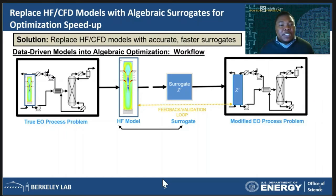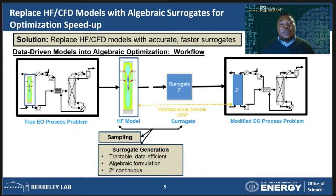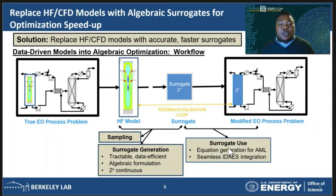In going from the high-fidelity model to the surrogate, there are two things we need: sampling and surrogate training. Due to the nature of algebraic modeling systems, we cannot just select any surrogate type — our surrogates need to meet some very specific requirements. The first is that, since we are talking about algebraic optimization, we must be able to represent our surrogates as algebraic equations. We also need to be able to get gradient information from the surrogates since the plan is to use them with gradient-based optimization algorithms. The surrogates also need to be tractable and data efficient. Once the surrogate is ready, we also need to address the problem of integrating the surrogate into the algebraic system workflow for optimization. We must convert these surrogates into a form that the algebraic modeling language can understand, and we need to ensure that the integration occurs automatically and seamlessly — since we may need to train the surrogate multiple times or try out different surrogate types.